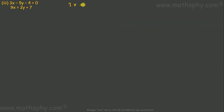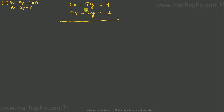The third one: 3x minus 5y equals negative 4 and 9x minus 2y equals 7. I can either multiply the first equation by 3 to get 9x, or multiply the first by 2 and the second by 5 to match the y terms. I'll choose the easier way and multiply the first equation by 3.